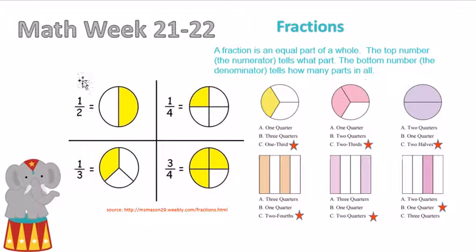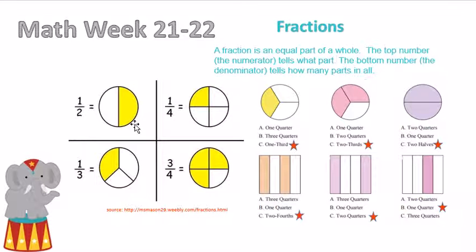Here I'll show you a picture of a one-half fraction, which looks like this when you make a figure out of it. It's one-half because there are two parts in all, and one part is shaded in. A fraction is an equal part of a whole.